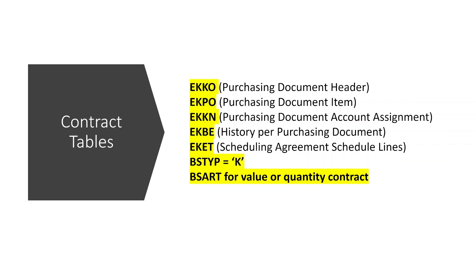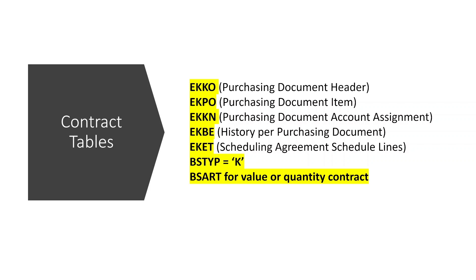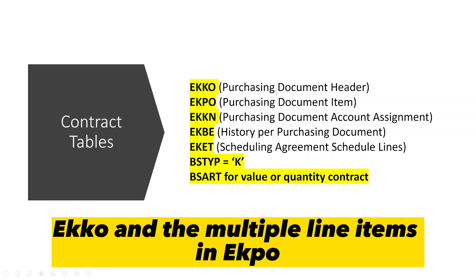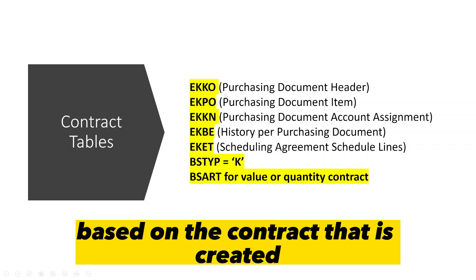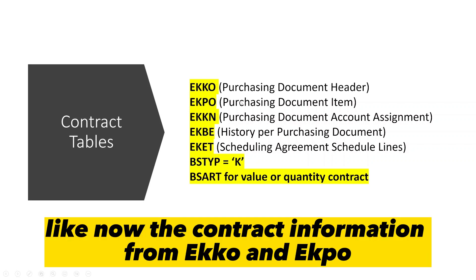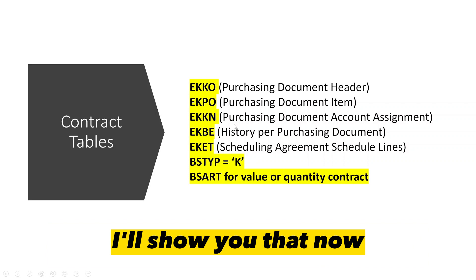We have looked at how to create contracts from the front-end SAP screens. Now, when a contract is created, it generally generates a contract line in EKKO and multiple line items in EKPO based on the contract created. Let me show you how to identify contract information from EKKO and EKPO.